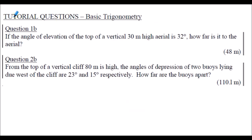Here are some tutorial questions on basic trigonometry. Question 1b states an angle of elevation, and Question 2 considers angles of depression of two buoys — a slightly more complicated question with a very similar approach. I encourage you to attempt these. Note that in Question 1b there is one right-angle triangle to solve, but in Question 2b there will be two right-angle triangles to solve, and you'll be subtracting one distance from another to find how far the buoys are apart.